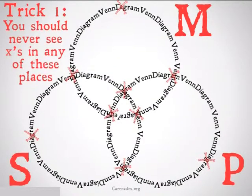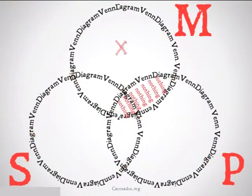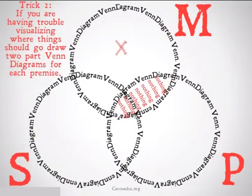Our first trick: you should never see X's in any of these places. If you see an X on a vertex where two Venn diagram spots cross, or somewhere overlapping with the outside, you've done something wrong. You should never have an X in any of these places.